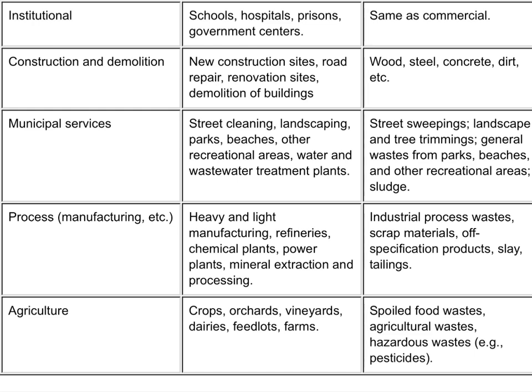3. Open areas: streets, parks, playgrounds, beaches, highways, etc. Waste types include special wastes and rubbish. 4. Treatment plant sites: water and wastewater from treatment processes, etc. Treatment plant waste is principally composed of residual sludge.